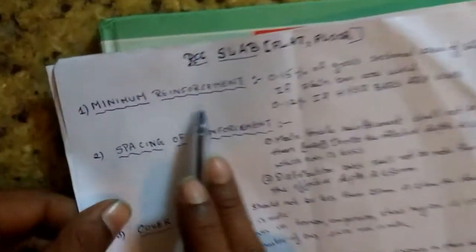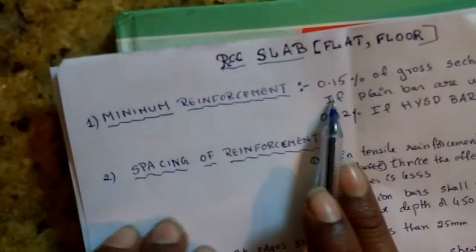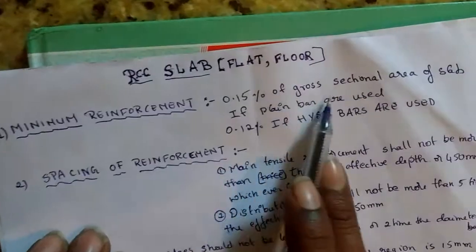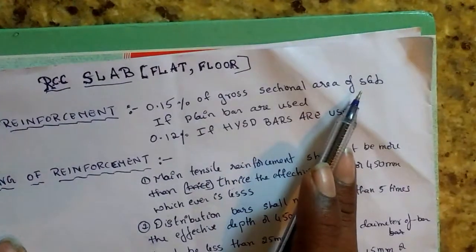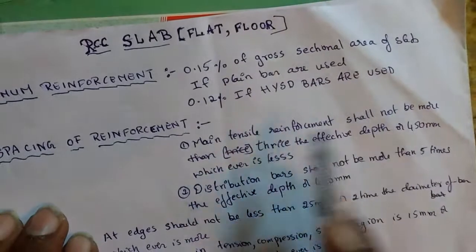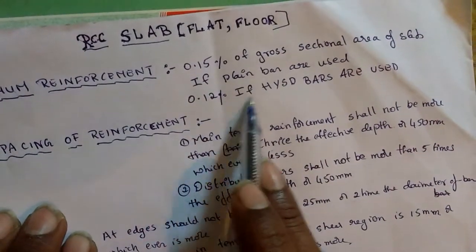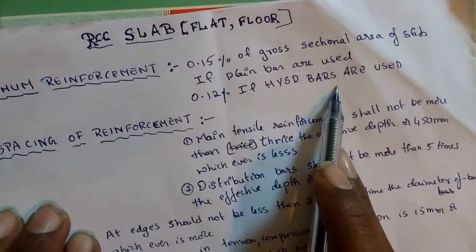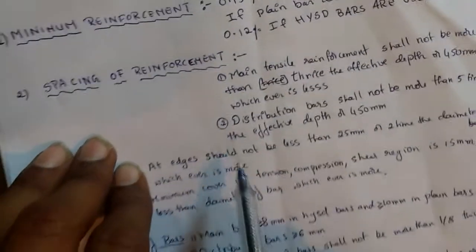The minimum reinforcement in slab is 0.15% of the gross cross-sectional area of the slab if you use plain bars, and 0.12% if you use high yield strength deformed bars, commonly known as HYSD bars.